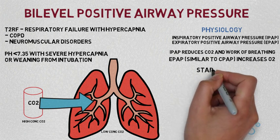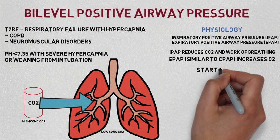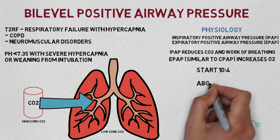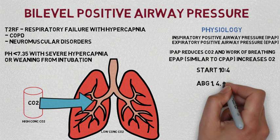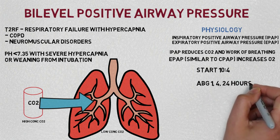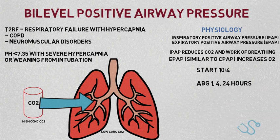The British Thoracic Society suggests starting at an IPAP of 10, increasing in intervals of 2 typically, and an EPAP of 4, as the usual practice. To monitor response, we typically do an arterial blood gas after one hour following a settings change, then at four hours, and then at twenty-four hours. The weaning process is often slower, with usually just a few hours break at a time.